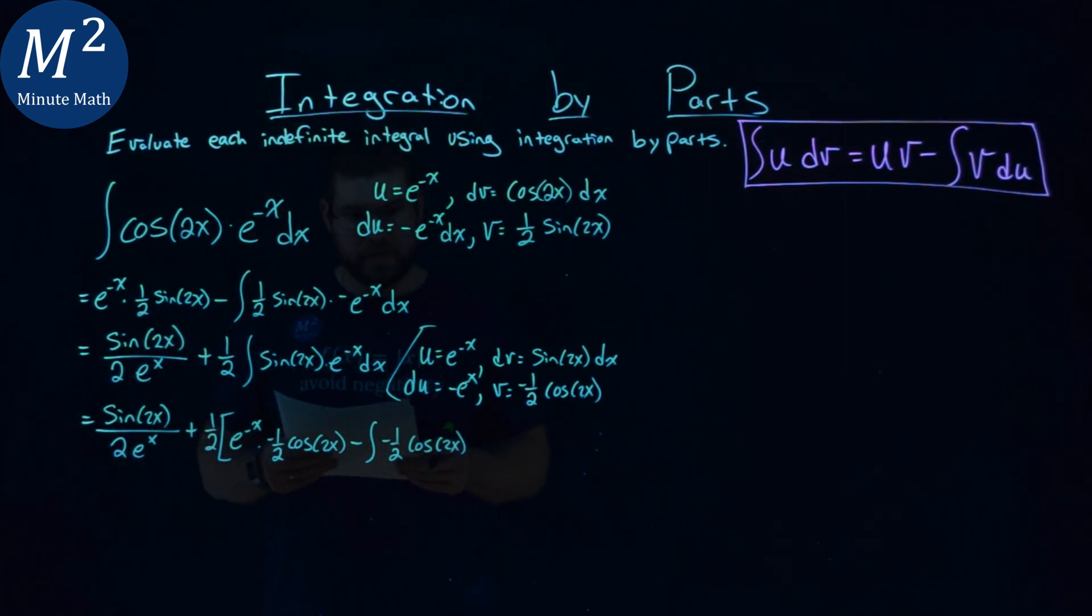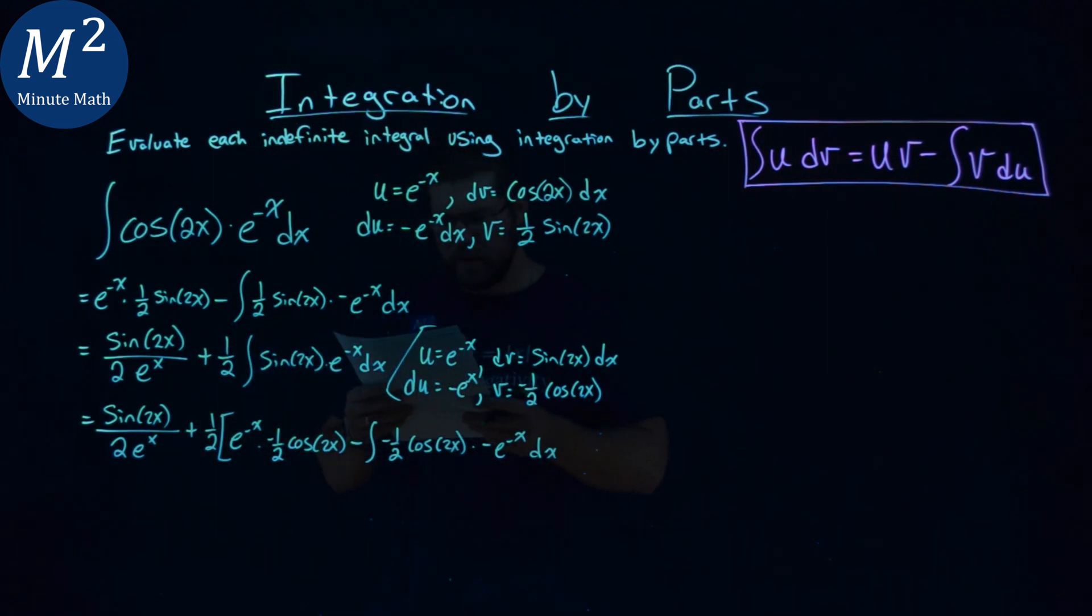Minus the integral of v, which is negative one-half cosine of 2x, times my du, which is negative e to the negative x. And then we still have our dx at the end. That's a lot here.